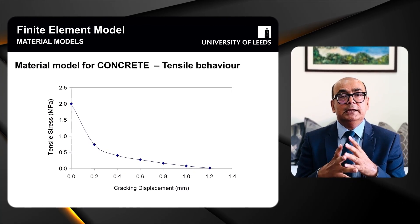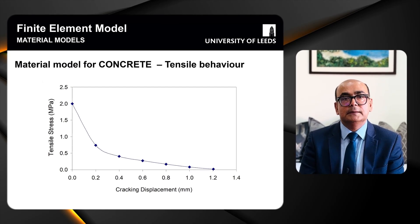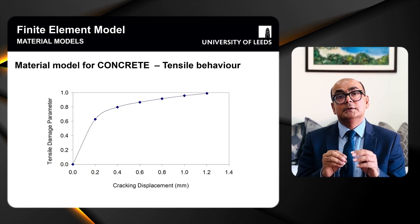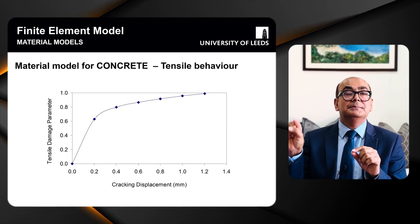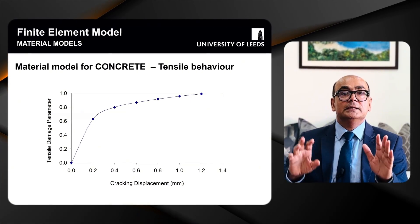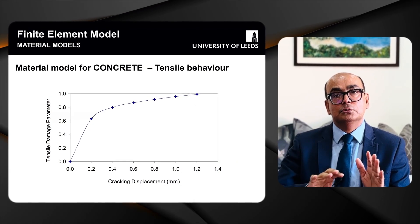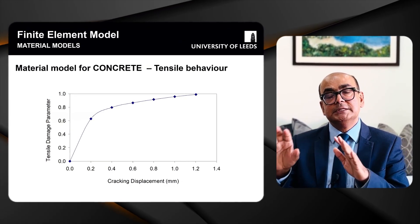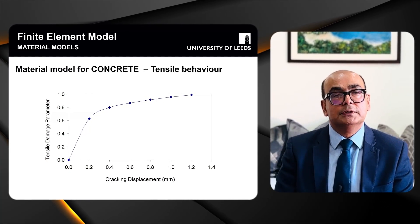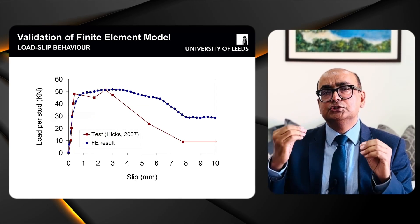This is the tensile stress versus cracking displacement behavior, which is very important as it enables the model to capture cracking. The tensile damage parameter equal to one means the concrete has completely cracked; zero means no crack at all. At a displacement of 1.2 mm it is assumed that the concrete has completely cracked.